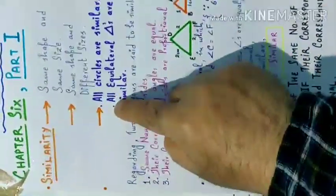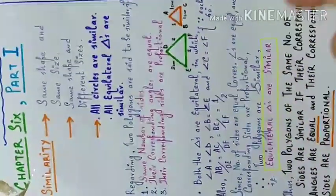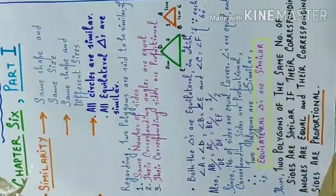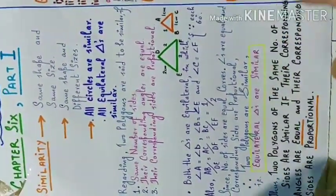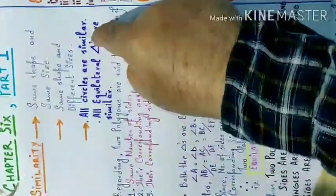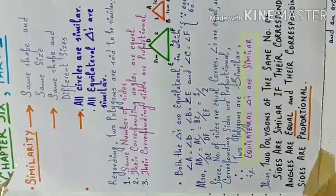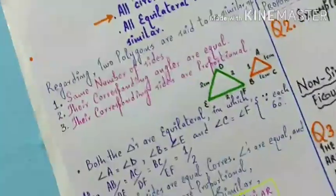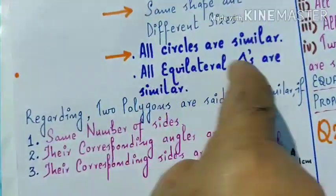All circles are similar — कोई भी radius हो: 1 cm, 2 cm, 20 cm, 200 cm — यह सारे circles having different radius, they are declared similar. इसी तरह all equilateral triangles are similar. All triangles are similar नहीं — वो हो भी सकता, नहीं भी हो सकता — but all equilateral triangles are similar।